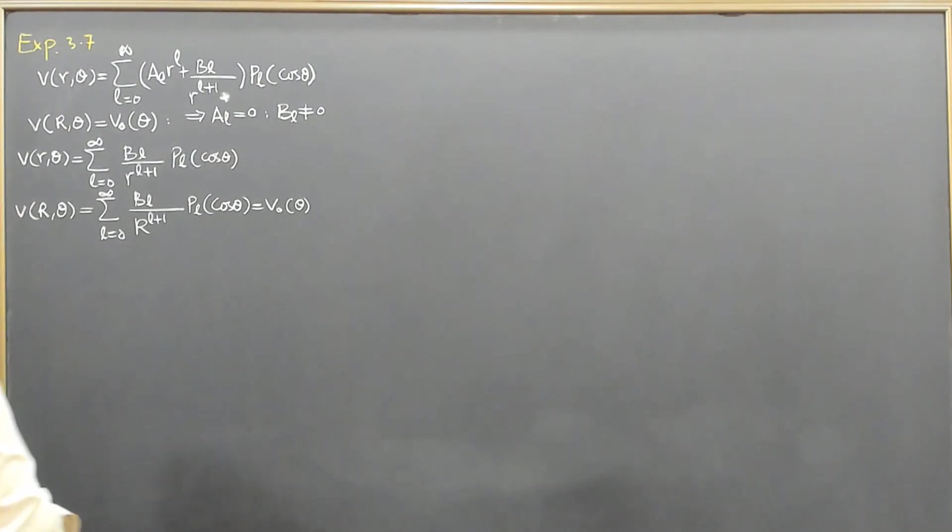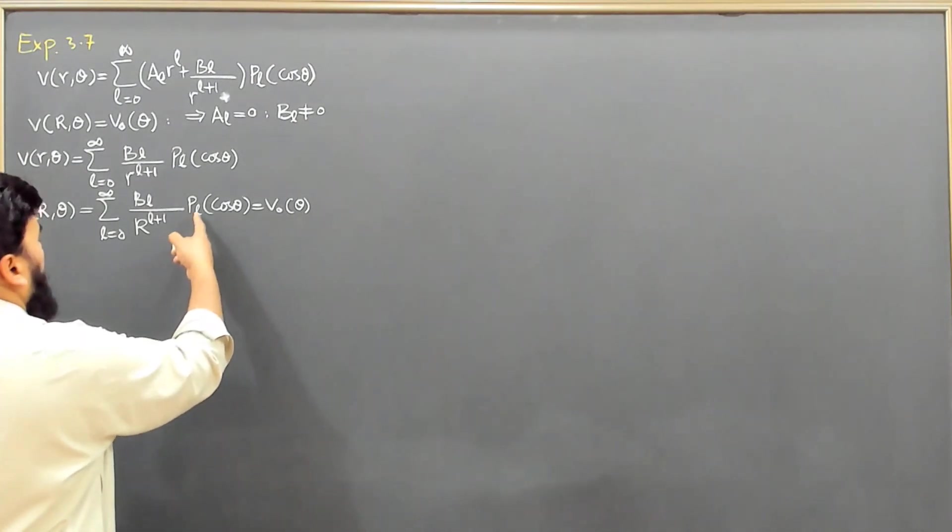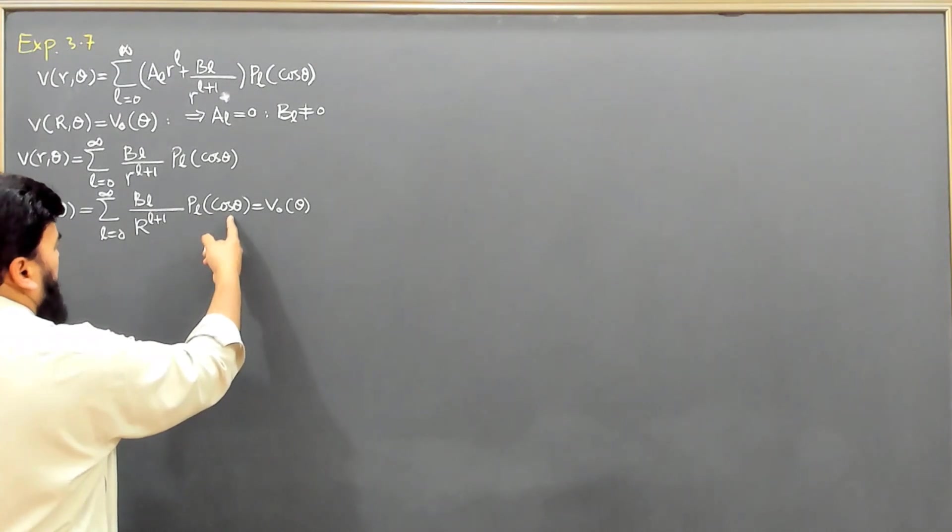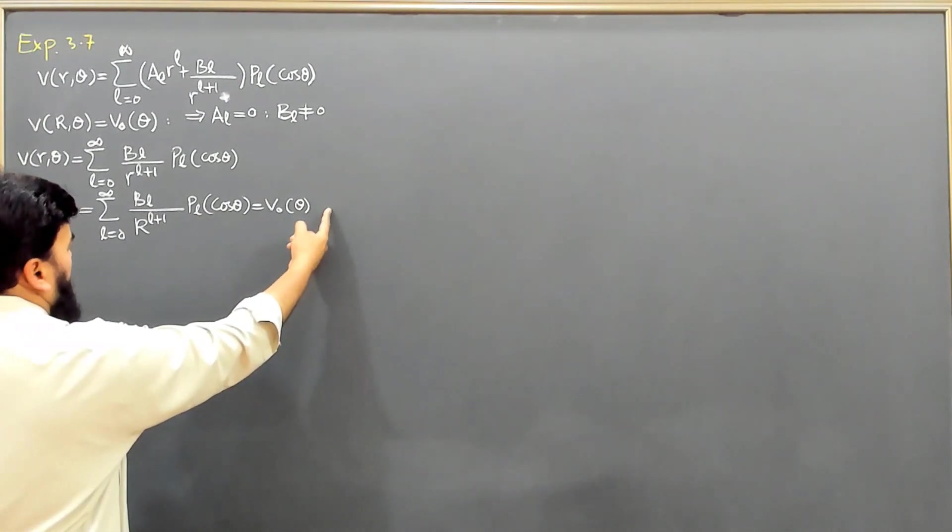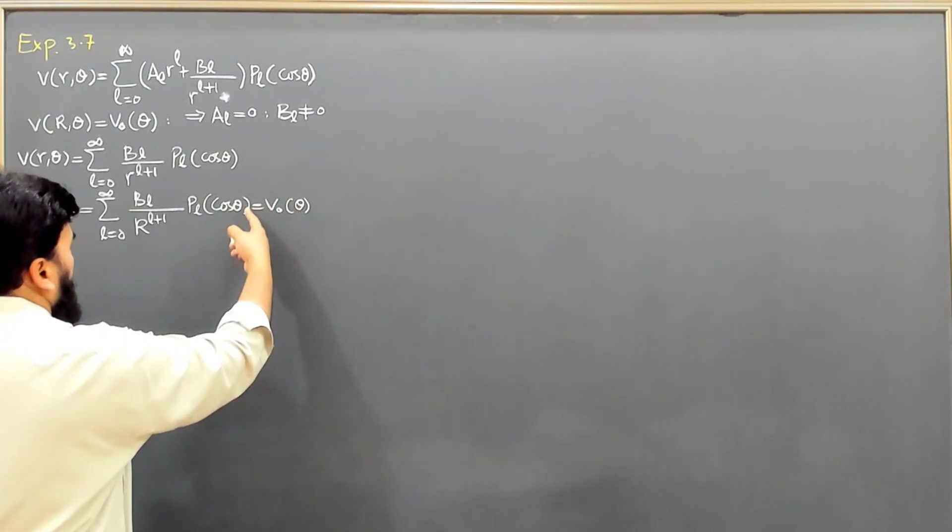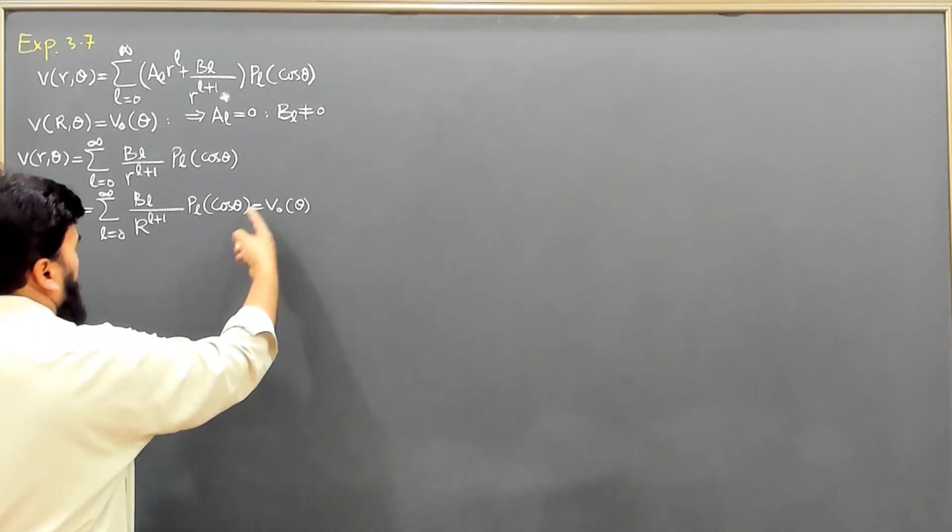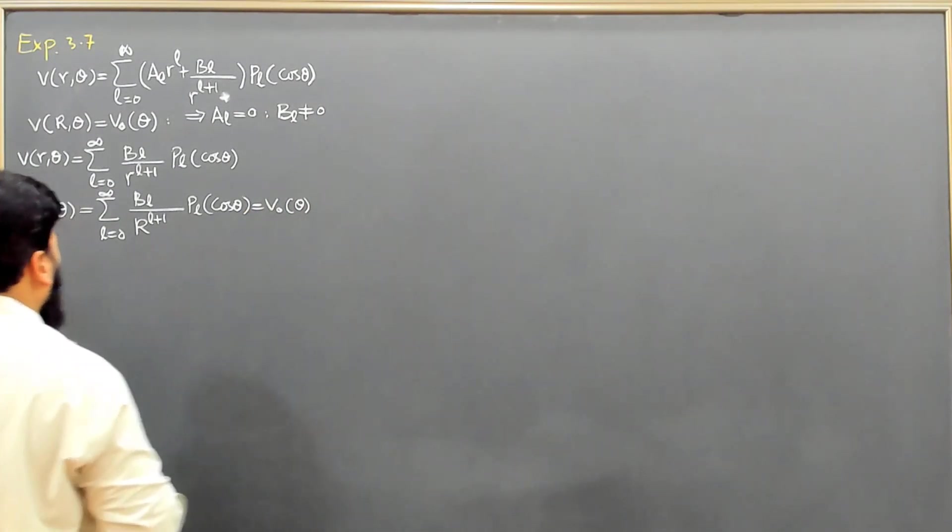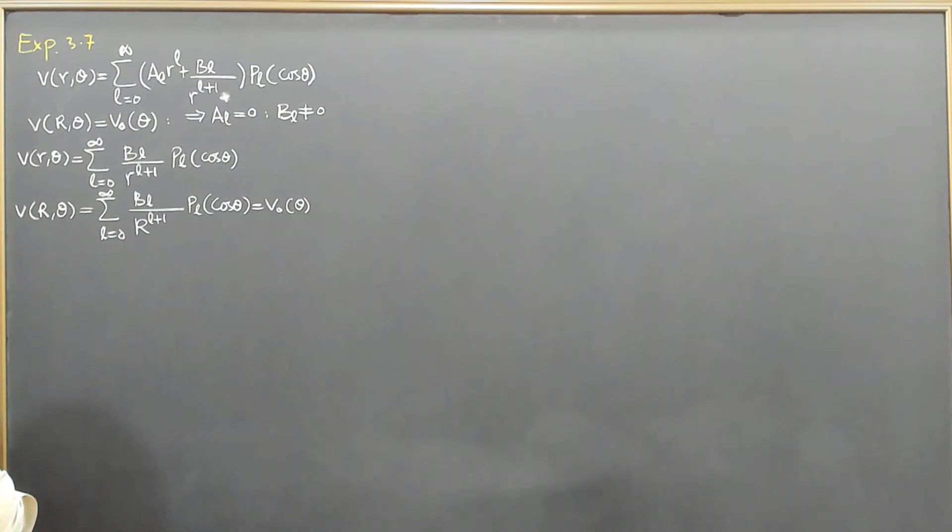Now we will do the previous practice. We will multiply both sides with PL'(cos θ), then integrate with sin θ dθ on both sides, taking the limit from 0 to π.